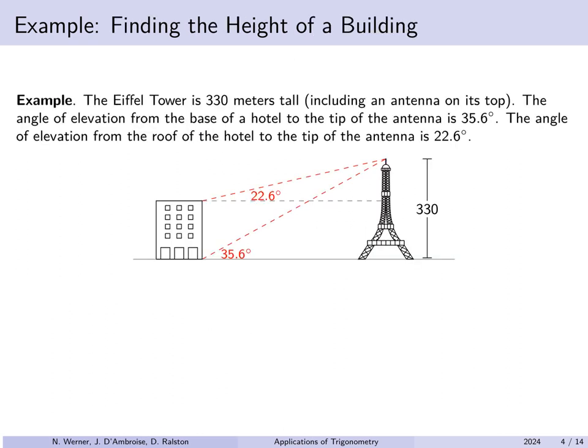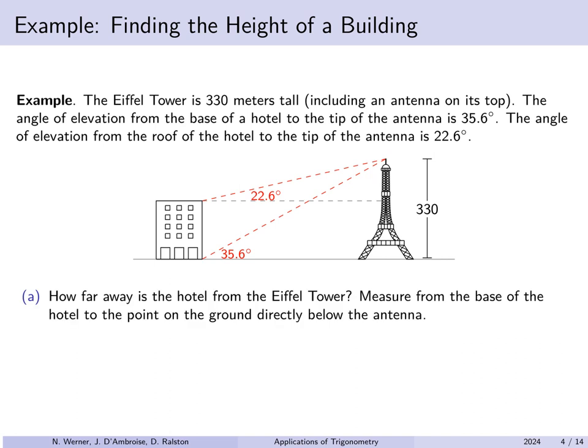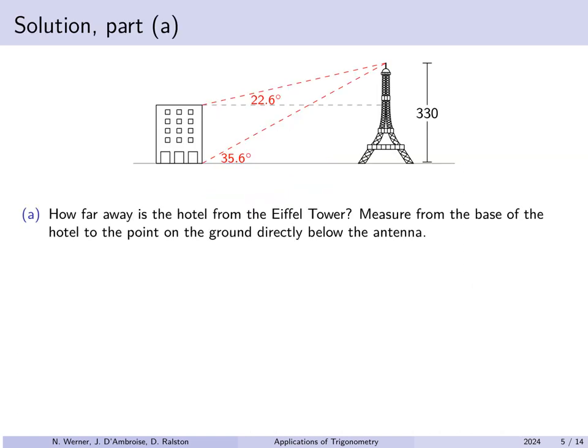Next, the Eiffel Tower is 330 meters tall, including an antenna on its top. The angle of elevation from the base of a hotel to the tip of that antenna is 35.6 degrees, but the angle of elevation from the roof of the hotel to the tip of the antenna is 22.6 degrees, as shown in this picture. First, how far away is the hotel from the Eiffel Tower? Second, how tall is the hotel? Here is our diagram — the Eiffel Tower has a known height, and we have two known angles of elevation from the base and top of the hotel respectively. To measure how far the hotel is from the Eiffel Tower, we want to find this distance x.